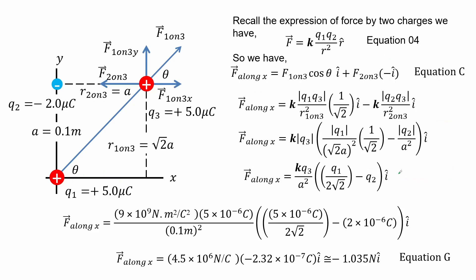Recall the expression of force by two charges we have in Equation 4. So we have for the forces along X, which is the sum of the components from force 1 and force 2. We get that the sum of forces is a negative value that suggests it favors going in the direction along the X axis as indicated by Equation G.